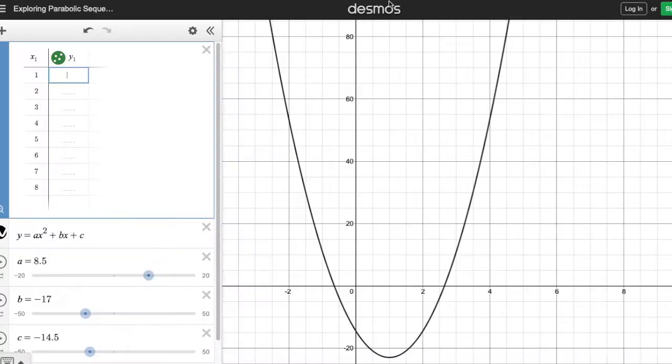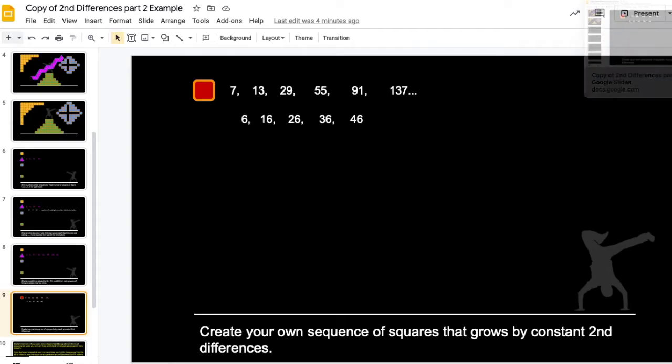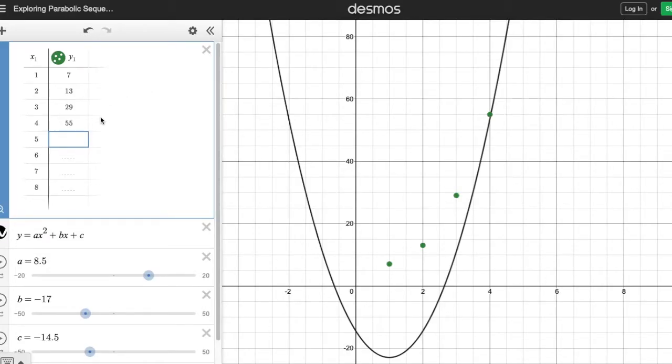7, 13, 29, 55. So 7, 13, 29, 55, 91, 137. Okay, and I don't have, I've got some blanks down here. It's fine if I don't have a full set of eight numbers in my sequence.